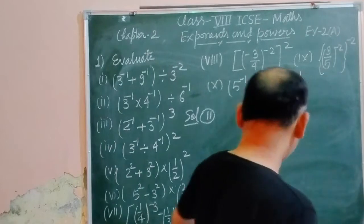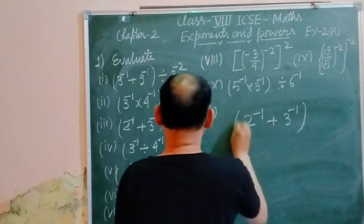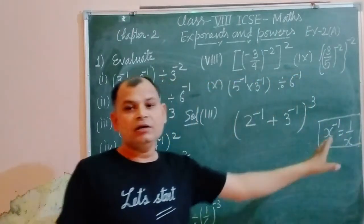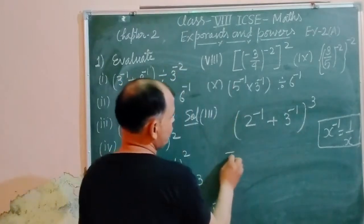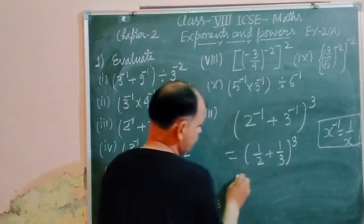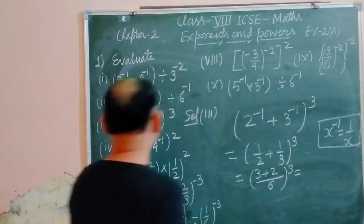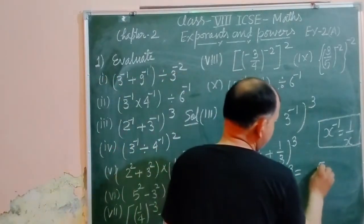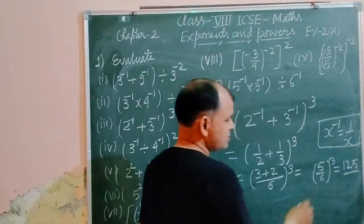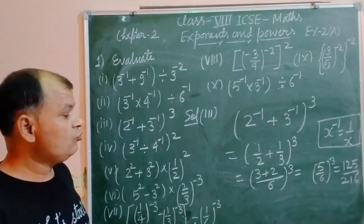Now the third part: (2 to the power minus 1 plus 3 to the power minus 1) to the power 3. Remember, x to the power minus 1 equals 1 over x. So 2 to the power minus 1 is 1/2 and 3 to the power minus 1 is 1/3. Adding: 1/2 + 1/3 = 5/6. Now we raise 5/6 to the power 3: 5 cubed is 125 and 6 cubed is 216. So the answer is 125 over 216.